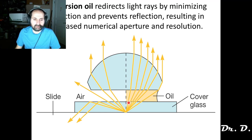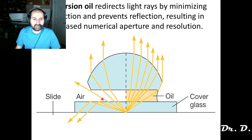Immersion oil works by increasing how much light makes it into the objective lens, because immersion oil has the same refractive index as glass, so the light does not bend and gets collected by the objective. Without immersion oil you lose a lot of light due to refraction and reflection.